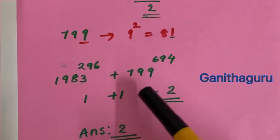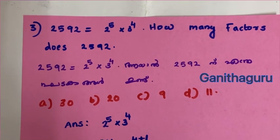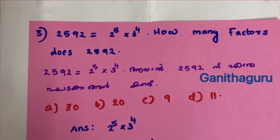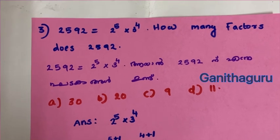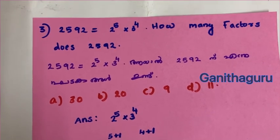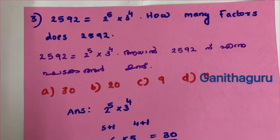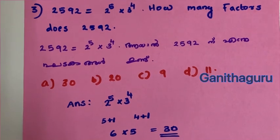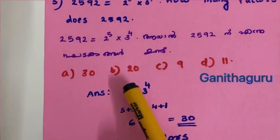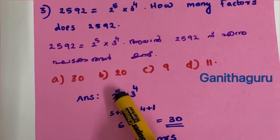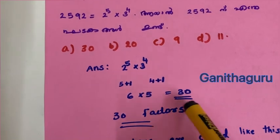Good question. 2592 equals 2 raised to 5 into 3 raised to 4. How many factors does 2592 have? Number of factors is (5+1)(4+1) = 6×5 = 30. Answer: 30 factors.